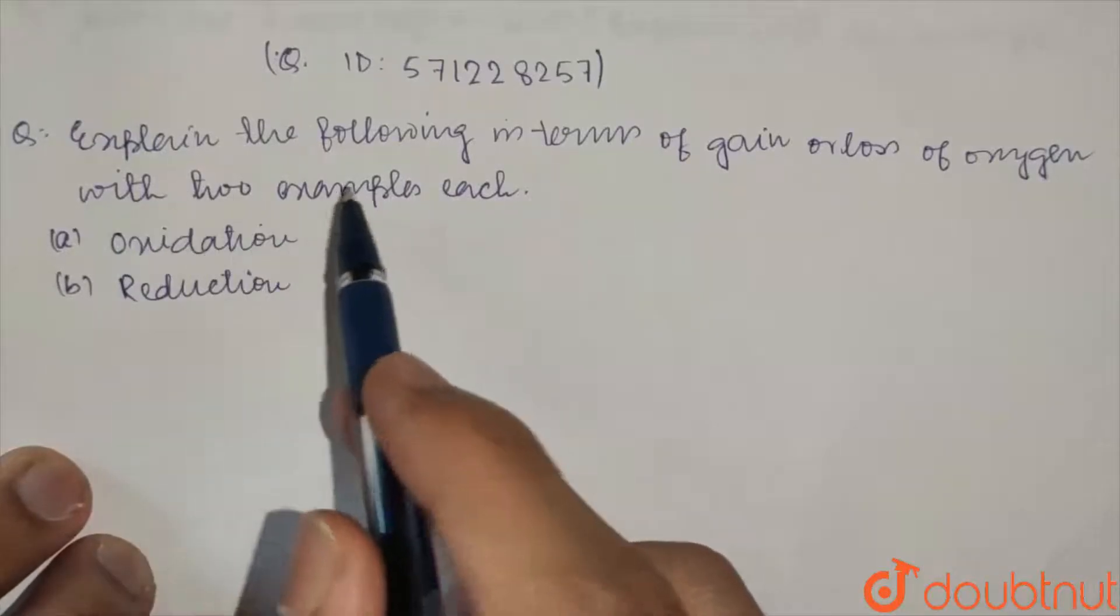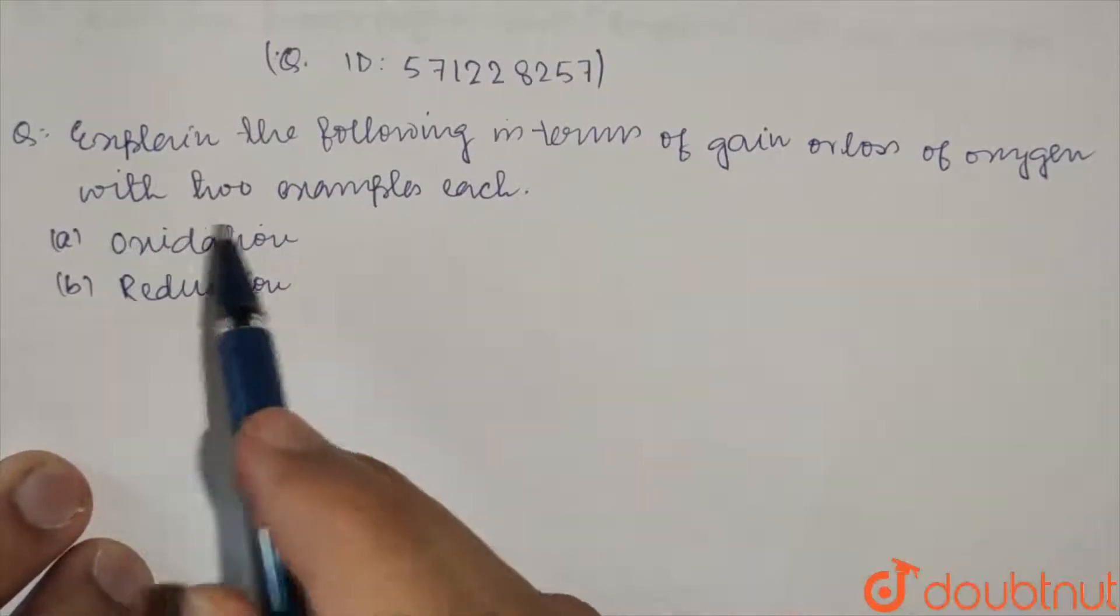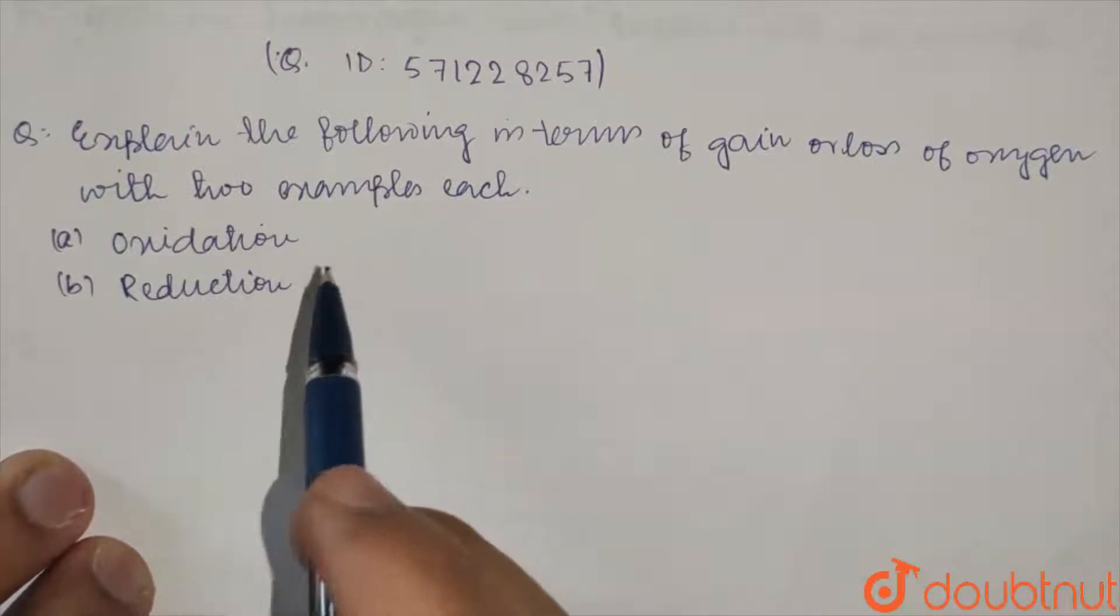Question is: explain the following in terms of gain or loss of oxygen with two examples each - oxidation and reduction.